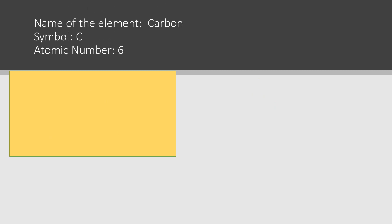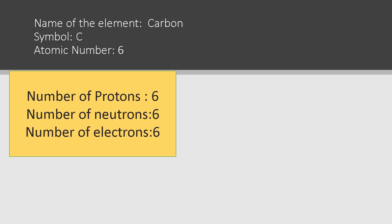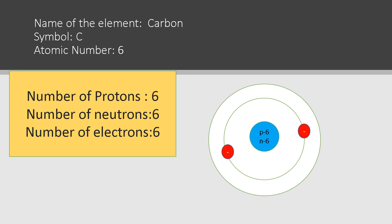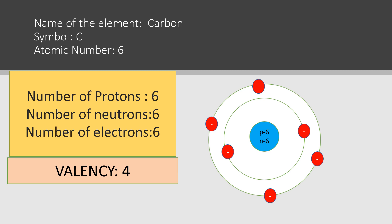This is carbon. Symbol is C, atomic number six. Number of protons six, number of neutrons six, and number of electrons six. The electronic configuration is two electrons in the first shell and four electrons in the second shell. Since the carbon atom contains four electrons in its outer shell, its covalency is four.